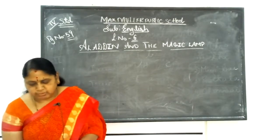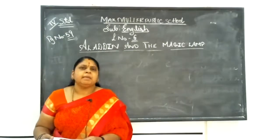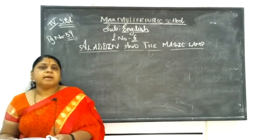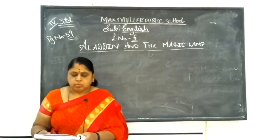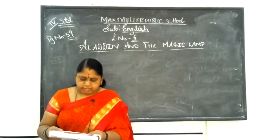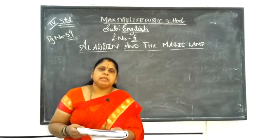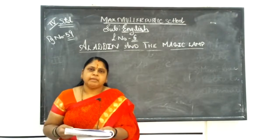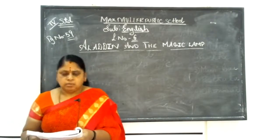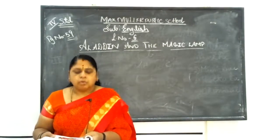Good morning children. Today I come with a new lesson, lesson number six: Aladdin and the Magic Lamp. This is a beautiful lesson about a boy and his magic lamp — what all the magic lamp did, and what the boy did. Come to the textbook and take a pencil with you. If any hard words are there, you can mark them and practice writing.